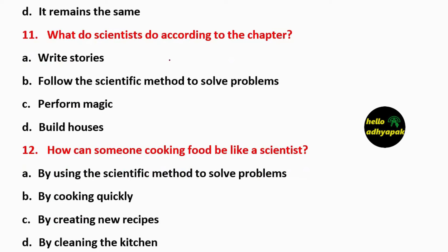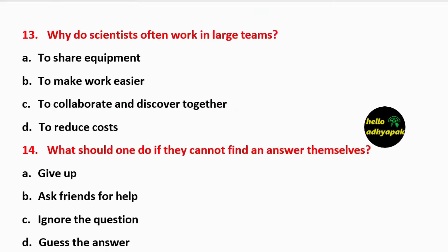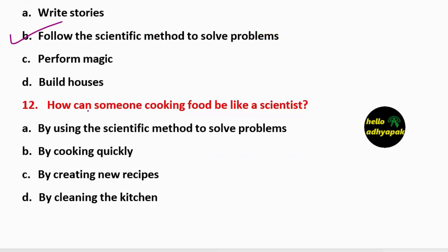Question 11: What do scientists do according to the chapter — write stories, follow the scientific method to solve problems, do magic, or build houses? The answer is they follow scientific methods to solve problems. Question 12: How can someone cooking food be like a scientist?